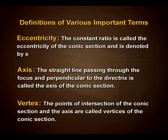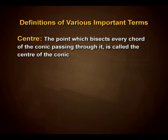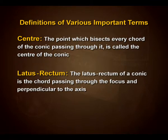Vertex: the points of intersection of the conic section and the axis are called vertices of the conic section. Centre: the point which bisects every chord of the conic passing through it is called the centre of the conic. Latus rectum: the latus rectum of a conic is the chord passing through the focus and perpendicular to the axis.